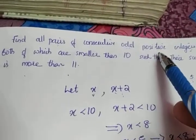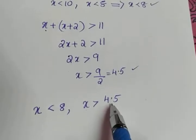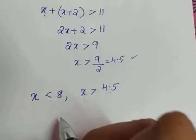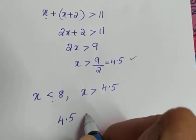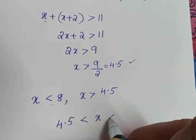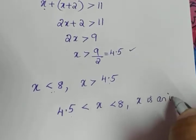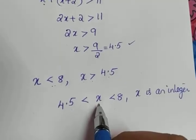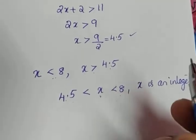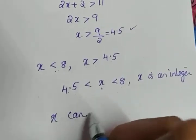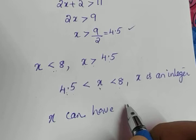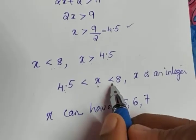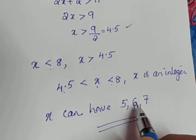We have to find the positive odd integers satisfying these conditions. The first condition is X greater than 4.5 and the second is X less than 8, so the combined condition is 4.5 less than X less than 8, where X is an integer. After 4.5 the next integer is 5, then 6, then 7. Can we take 8? No, it is strictly less than. So X can take the values 5, 6, and 7.